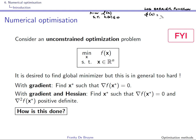The log barrier function is defined as φ(x) = −log(−h(x)), defined on the domain where h(x) < 0. When h(x) tends to zero, φ(x) tends to infinity, which creates a barrier that does not allow h(x) to become positive.